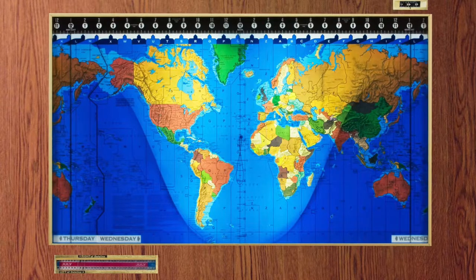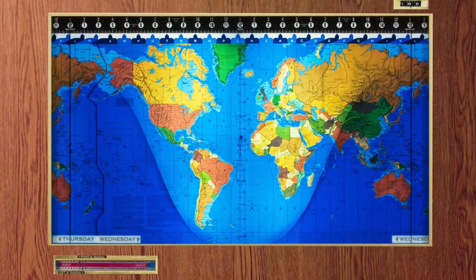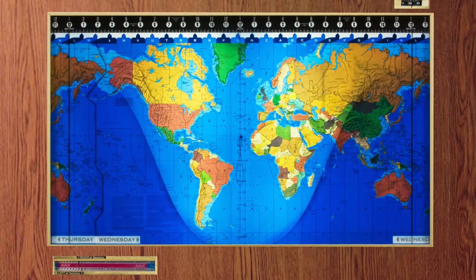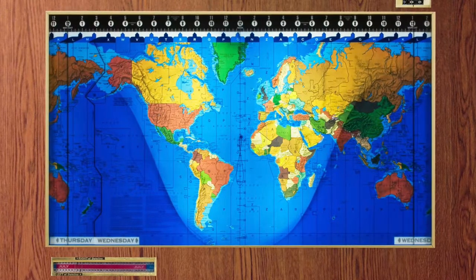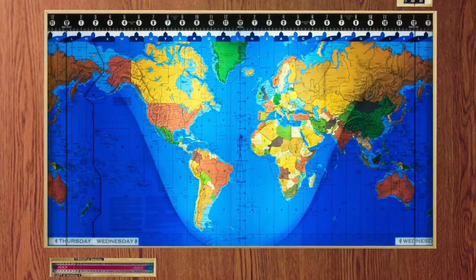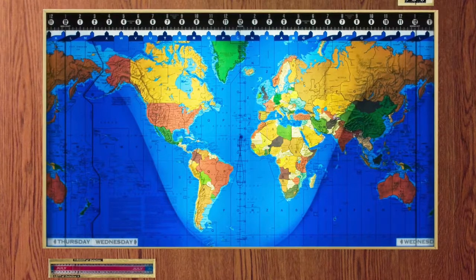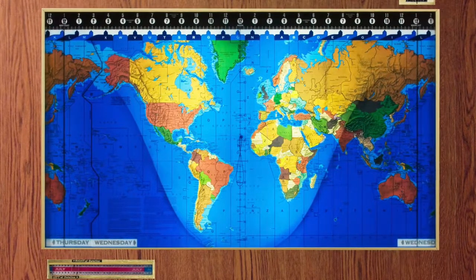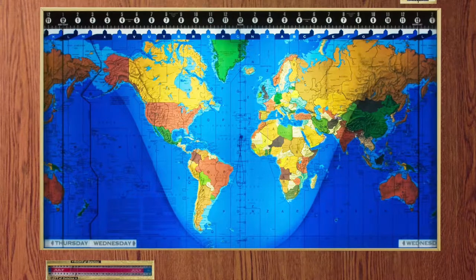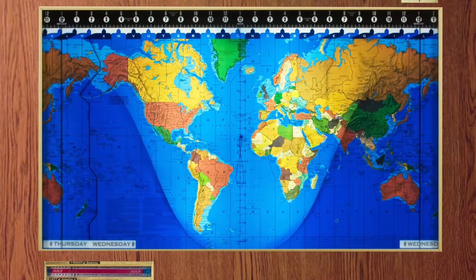It also shows the actual date in the lower left, the time in the bar across the top, and the minutes at the little dial at the very top. You can also see which day of the week it is, Thursday or Wednesday, and the changes on the international date line.